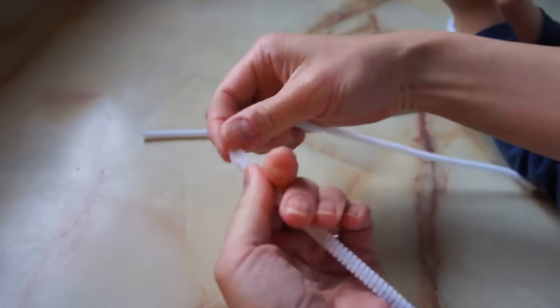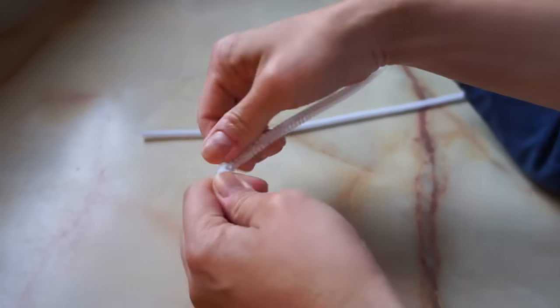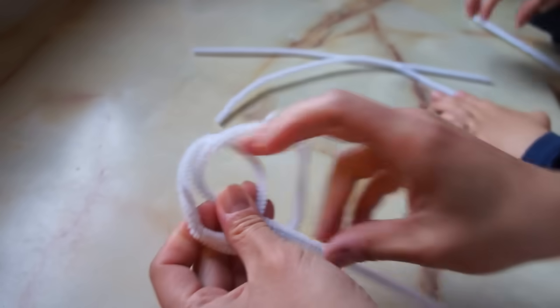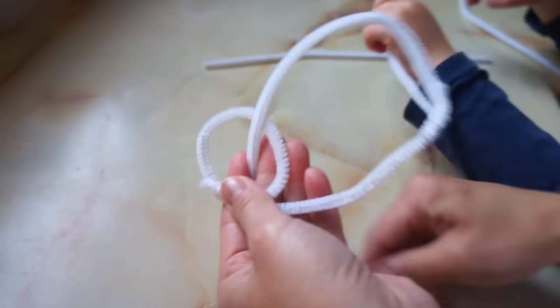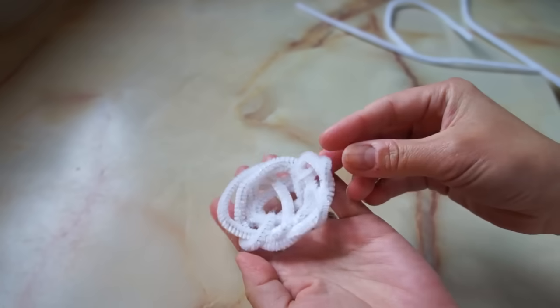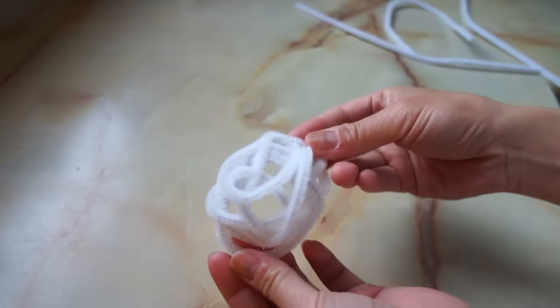So you're going to start off with taking three white pipe cleaners and twisting them into a kind of loose coil. Something kind of like this, but feel free to shape and bend it any way you like.